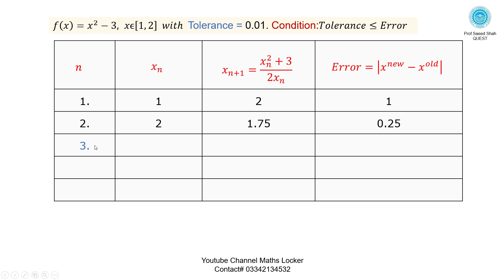Iteration 3: Take xₙ = 1.75. Substituting 1.75 into the formula: xₙ₊₁ ≈ 1.7321. Error = |1.7321 - 1.75| ≈ 0.01786. Check condition: 0.01 < 0.01786, condition not met — go to next iteration.